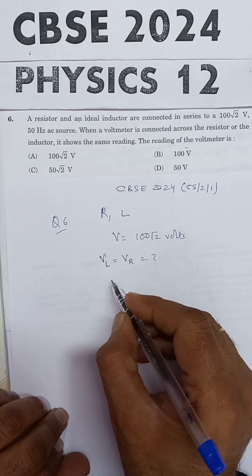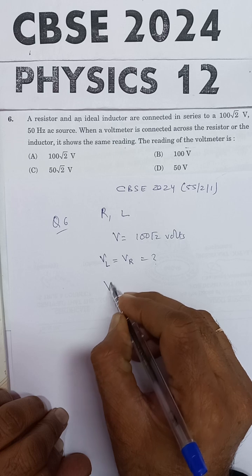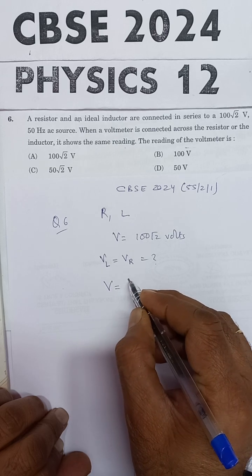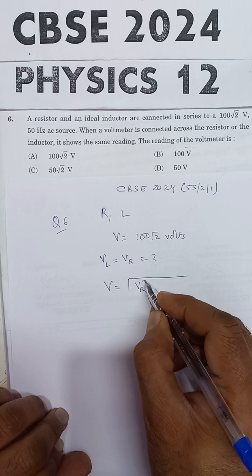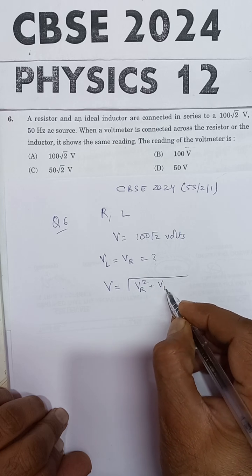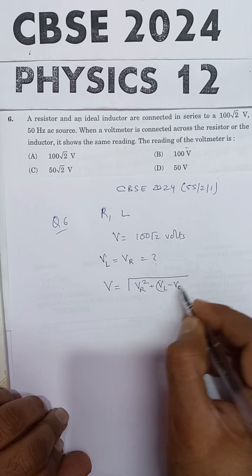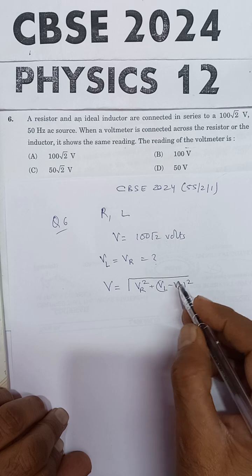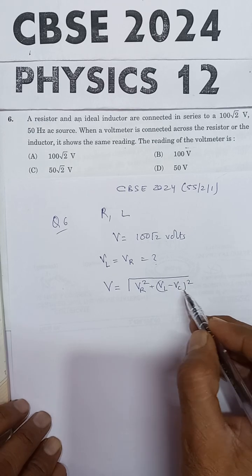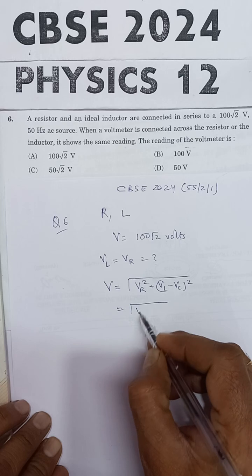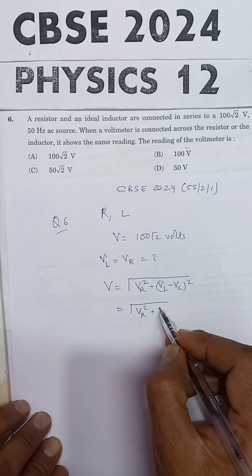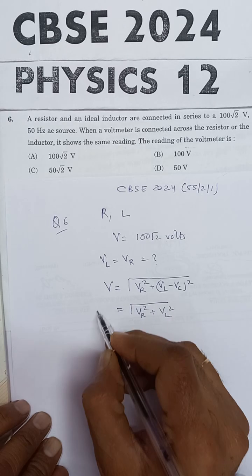The formula used is: the applied potential difference V equals under root of VR square plus VL minus VC whole square. Since capacitance is not given, we omit that term. So the formula becomes V equals under root of VR square plus VL square.